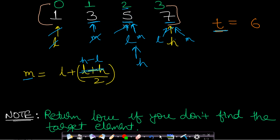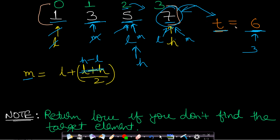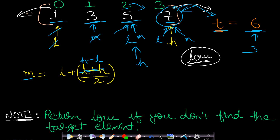High is now less than low, so the loop breaks. At this point, low is pointing to the value seven. Since this is a sorted array, six would go to index three, because six is greater than elements at indices zero, one, and two. When six is inserted at index three, the element at index three gets pushed right. Therefore, we just return whatever index low is pointing to. For the out-of-bounds case, you can first check if the target is less than the first element or greater than the last element, and return either index zero or the size of the array.